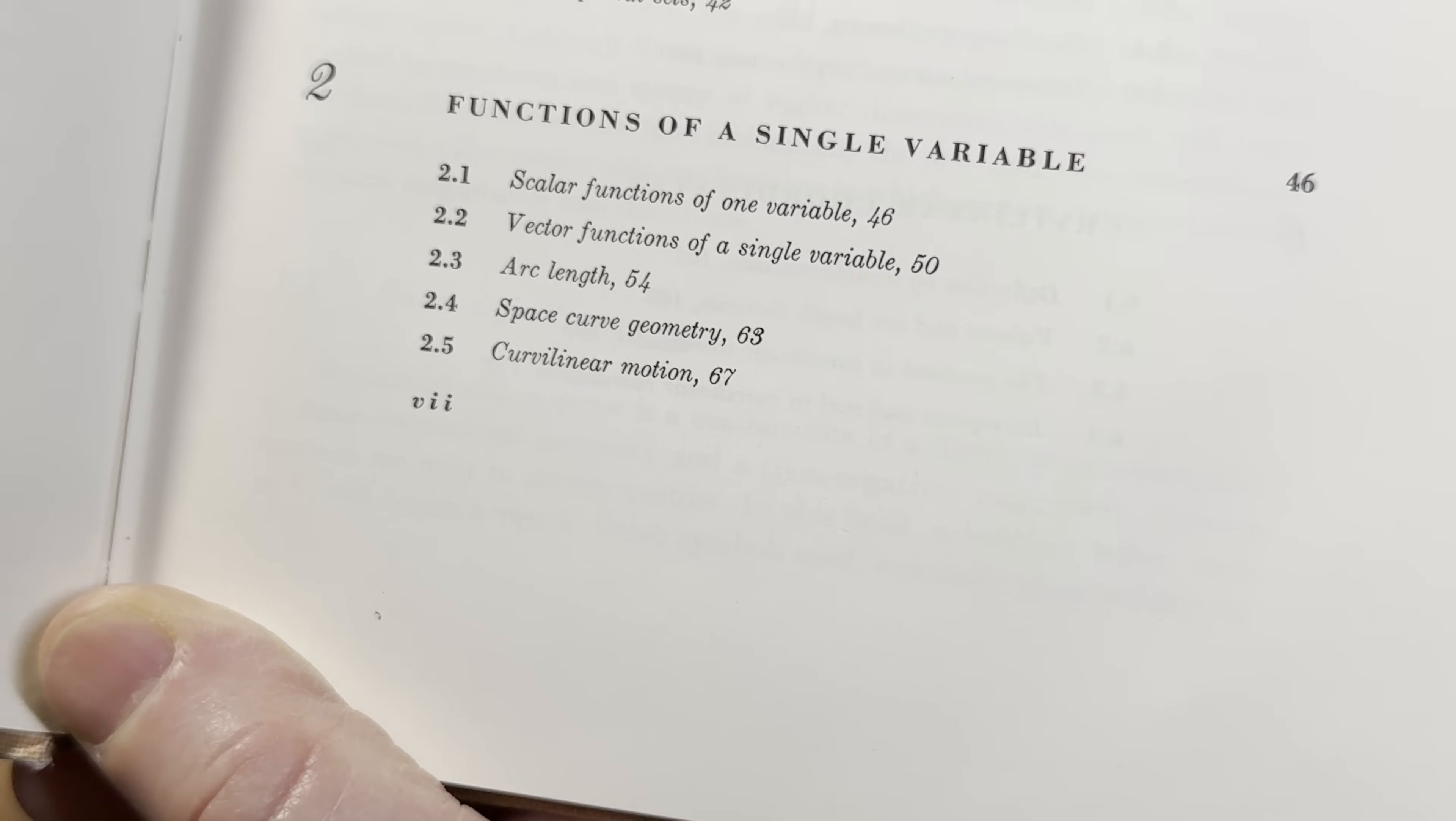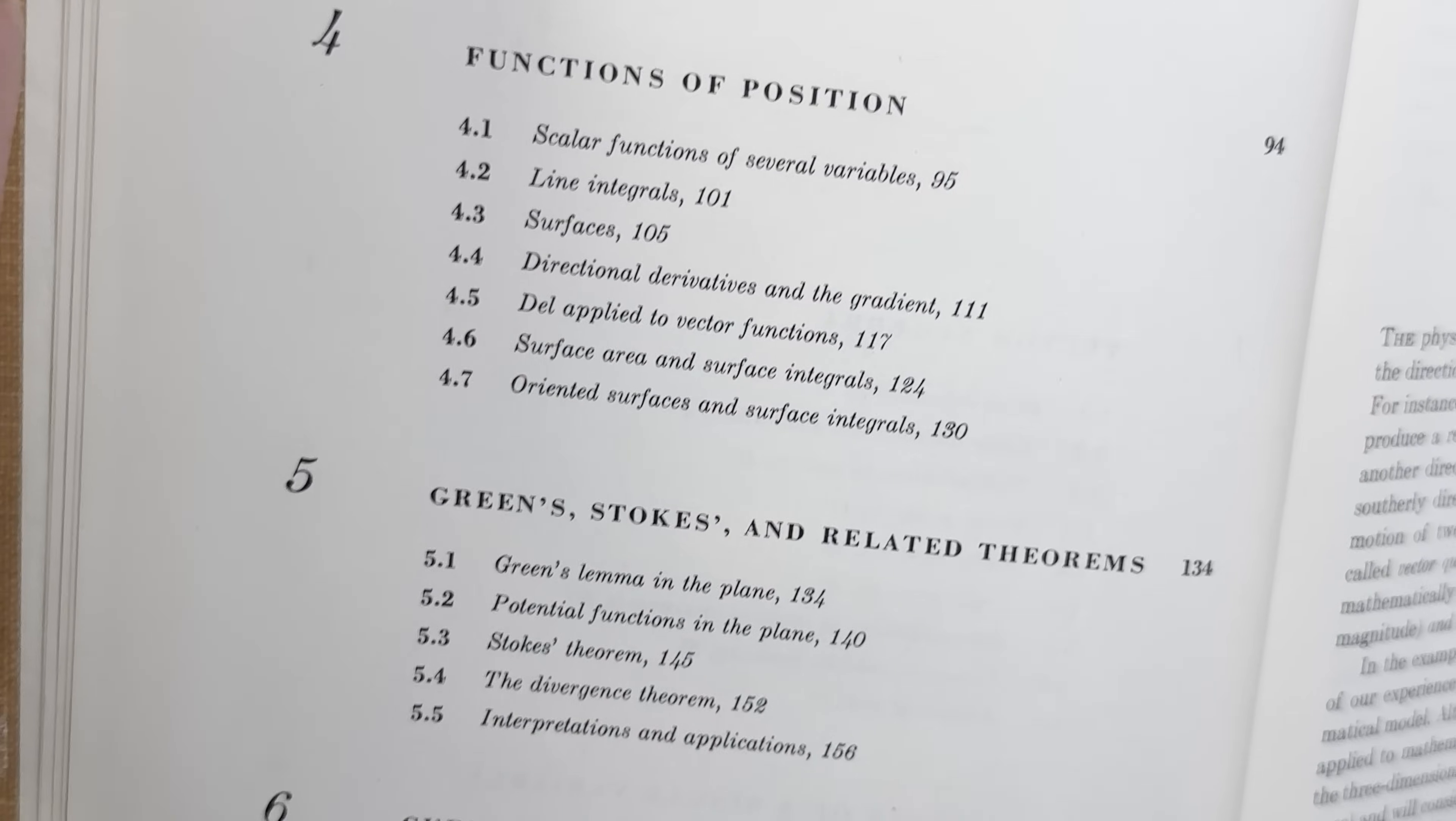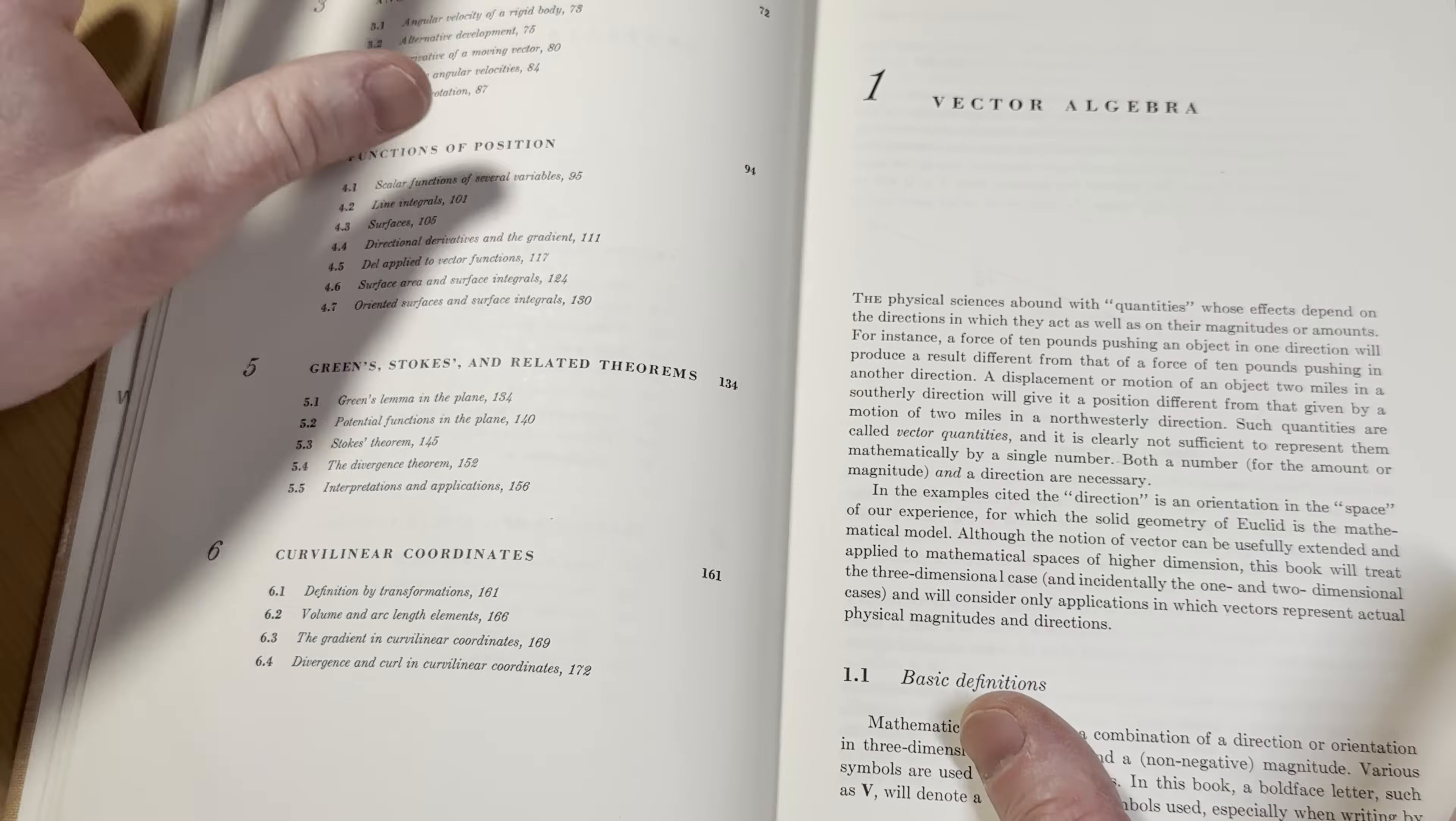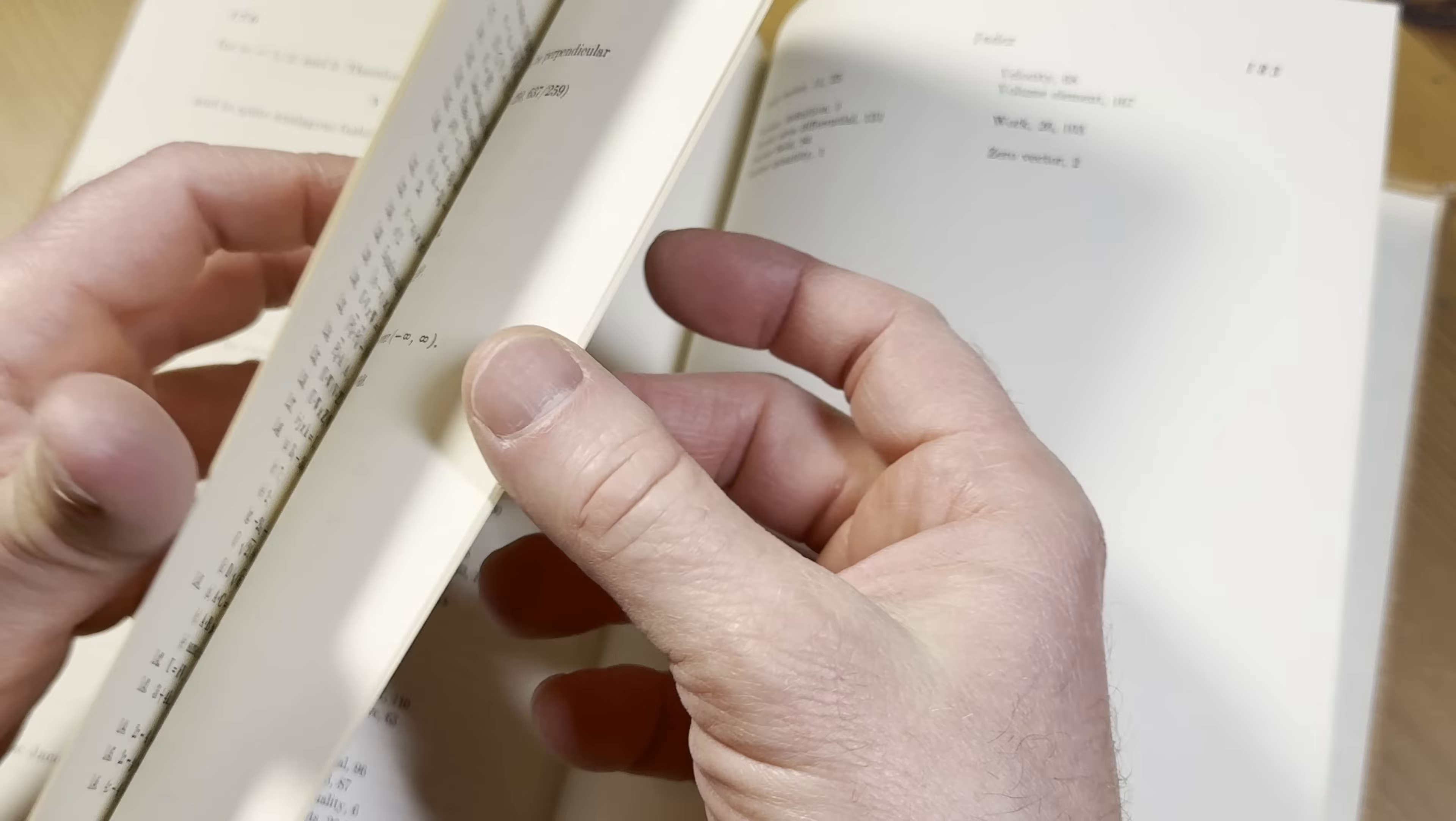Functions of a single variable, angular velocity, functions of position, then Green's Stokes and related theorems, and then curvilinear coordinates. You'll notice it says nothing about answers, however this book does actually have answers to the exercises in the back of the book.